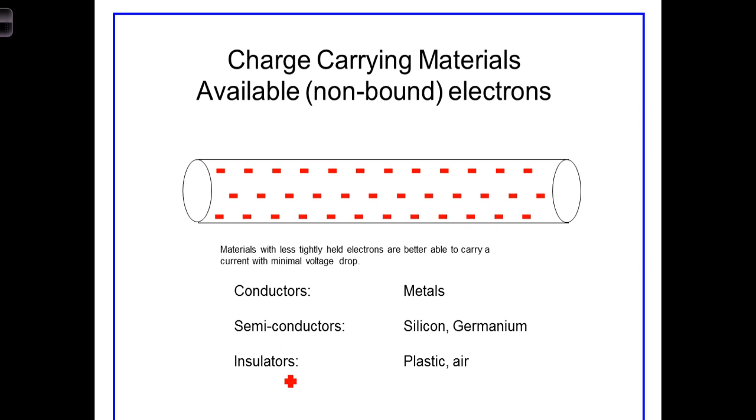Conductors are made up of atoms with an abundance of loosely bound electrons, while insulators consist of atoms with tightly bound electrons. And in between is a group of materials, both atoms and molecules, that can be manipulated to act as either conductors or insulators. They are referred to as semiconductors.